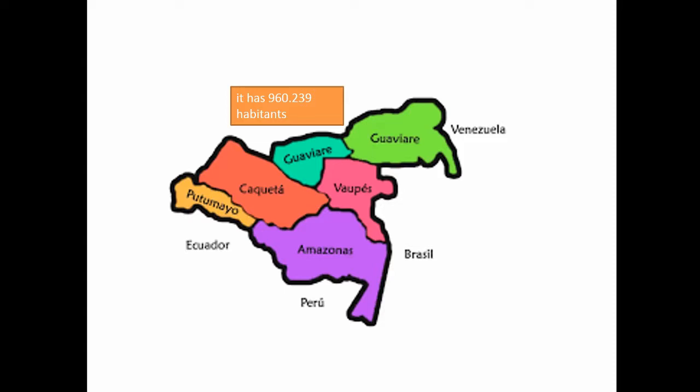In this region, 960,269 habitants reside in the Colombian Amazon, corresponding to 2.3% of the total national population.